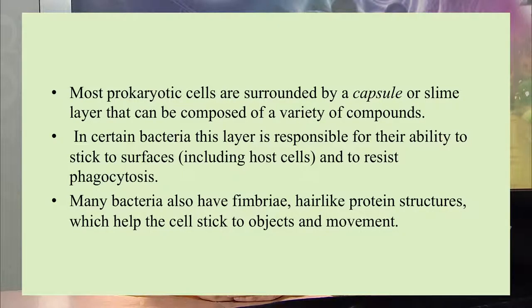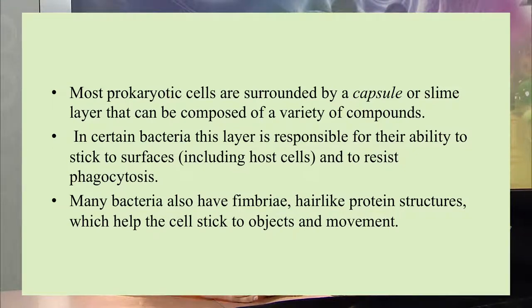The other category of prokaryotic cells is bacteria. About five percent of bacteria cause disease, such as tuberculosis, strep throat, gonorrhea, and acne. Bacteria have features such as being surrounded by a capsule or slime layer, which is made up of a variety of components. This layer is responsible for the ability to stick to surfaces and helps them resist the phagocytic process. Many bacteria also have fimbriae — hair-like protein structures that also help them stick to surfaces.